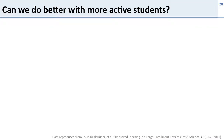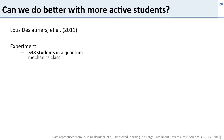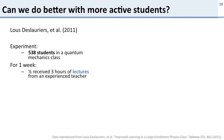So can we do better with more active students? There's a great study I want to share: an experiment with 540 students in a quantum mechanics class. Half got three hours of lectures from an experienced, well-rated lecturer. The other half got three hours of peer instruction — instead of receiving lectures, they were told to sit down, discuss problems, and work on problems with their colleagues, and then the teacher went through the solutions.